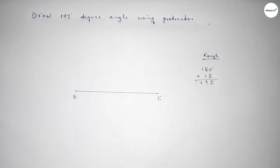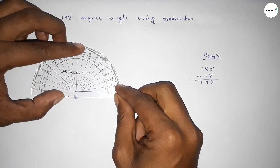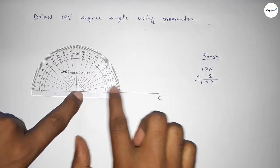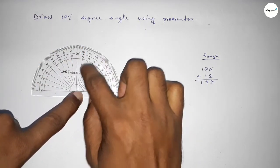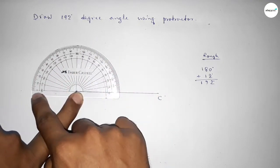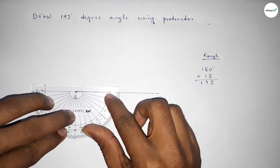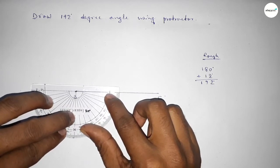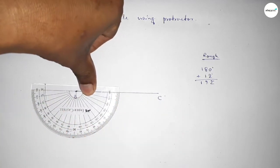So first counting 180 degree angle. So putting the protractor on the point B and counting the angle 180 degree. So this is total 180 degree. Again putting the protractor on the point B and counting the angle 12 degree.